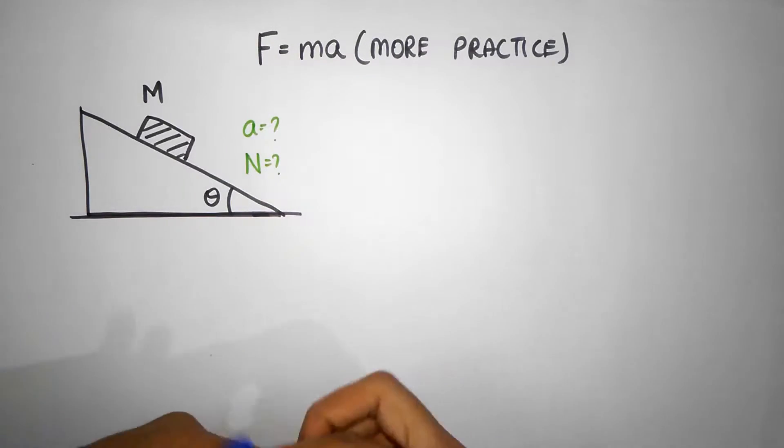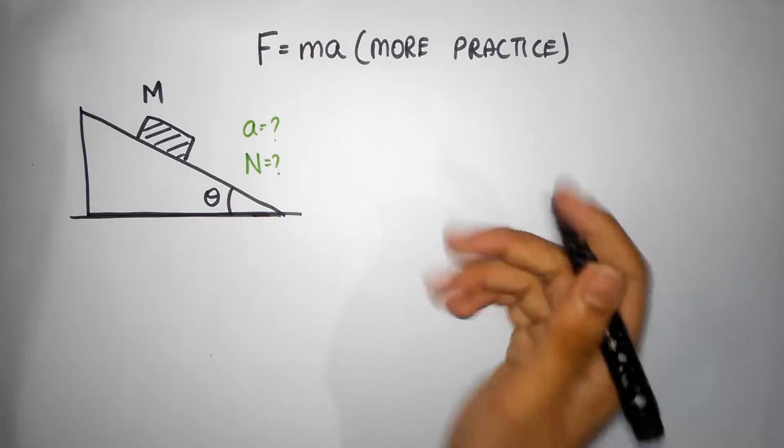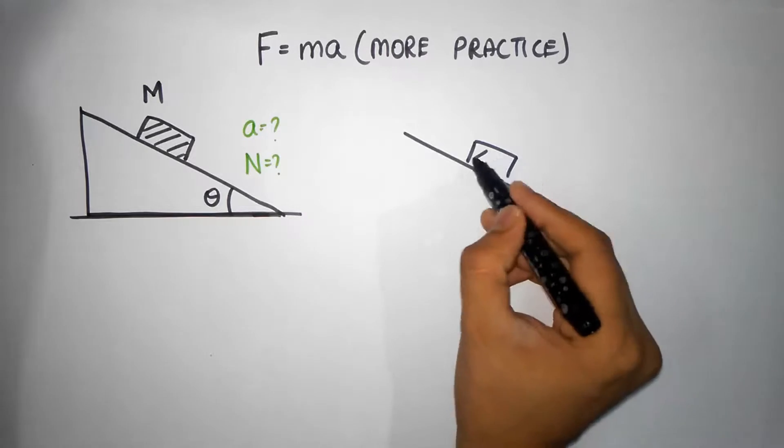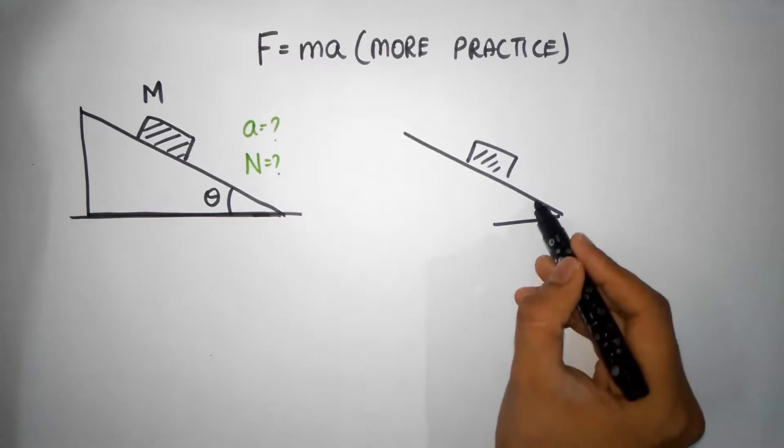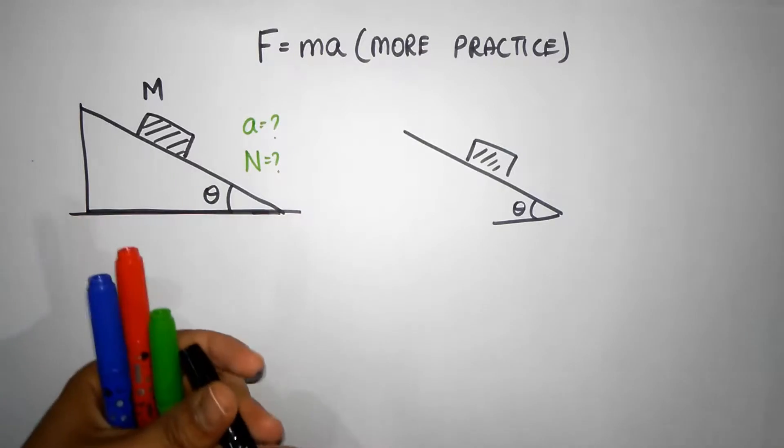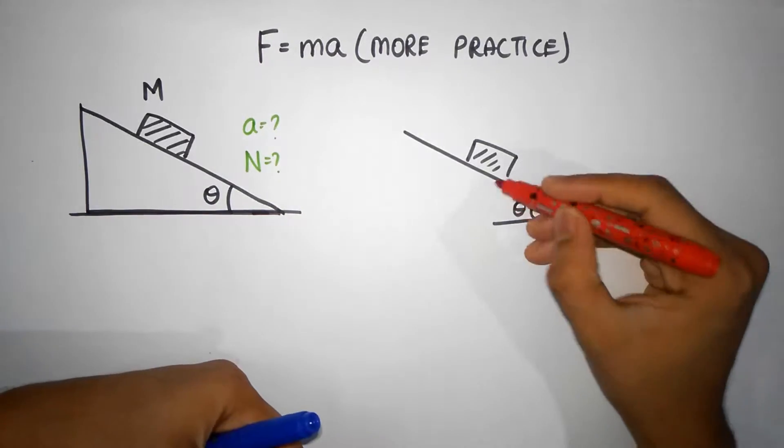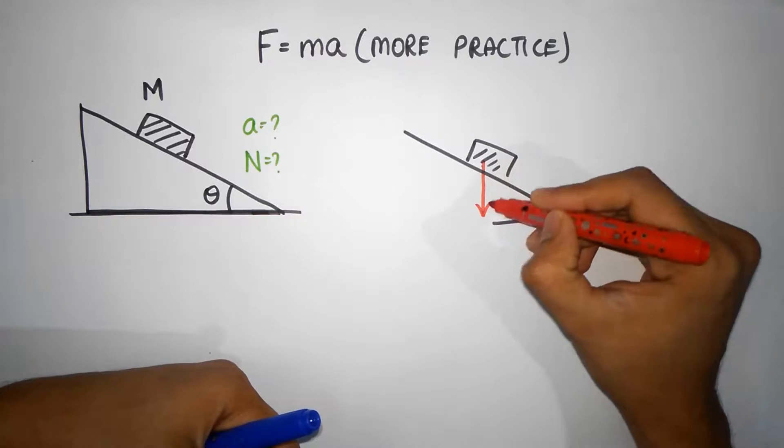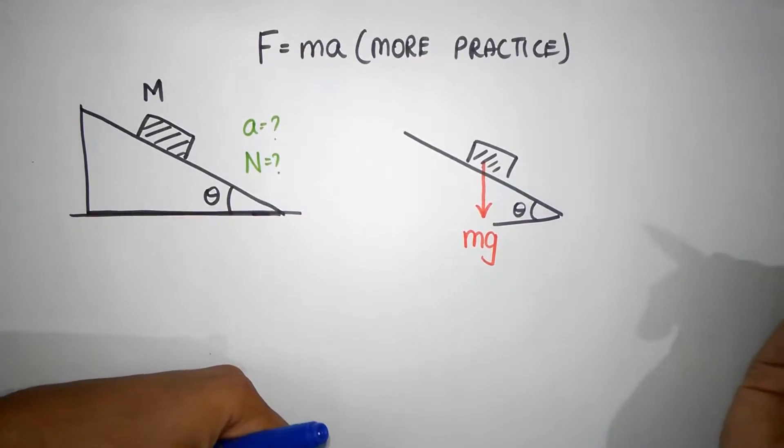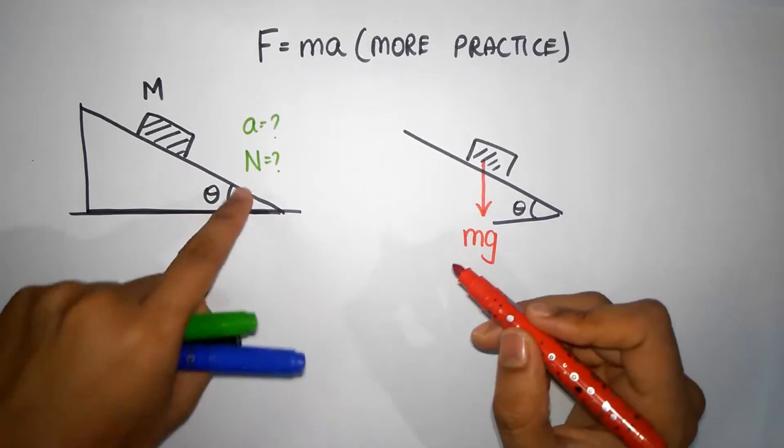So let me draw it over here. Here is the object and this angle is theta. All right, let's write down what the forces are. We have one force which is acting downwards, and that force is mg. That is the gravitational force, that's always mg downwards.